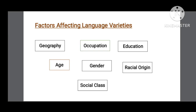There are many factors which affect language variations. The first one is geography, the second one is occupation, the third one is education, age, gender, racial origin, and social class. These are some of the major factors which affect language variations.